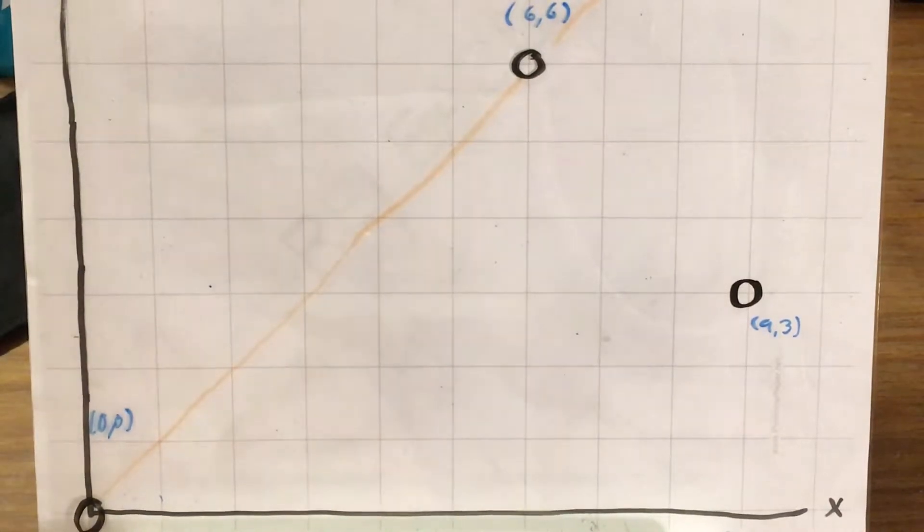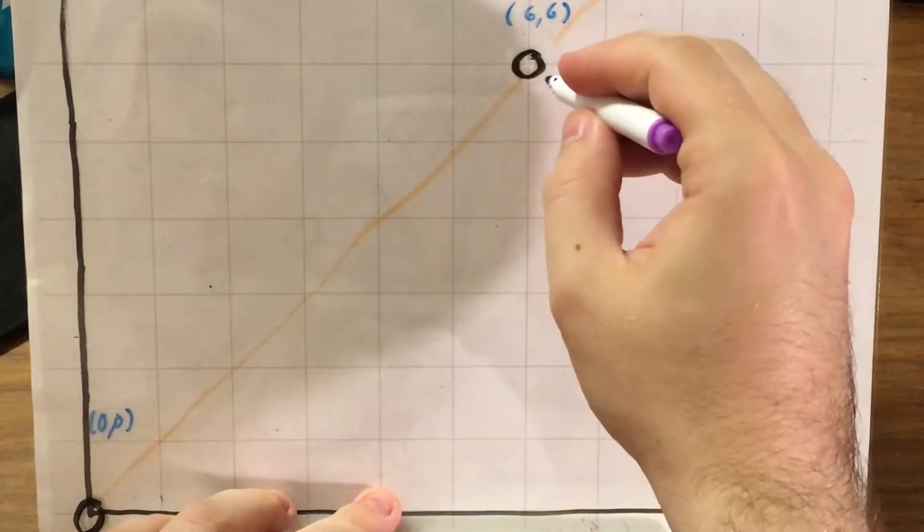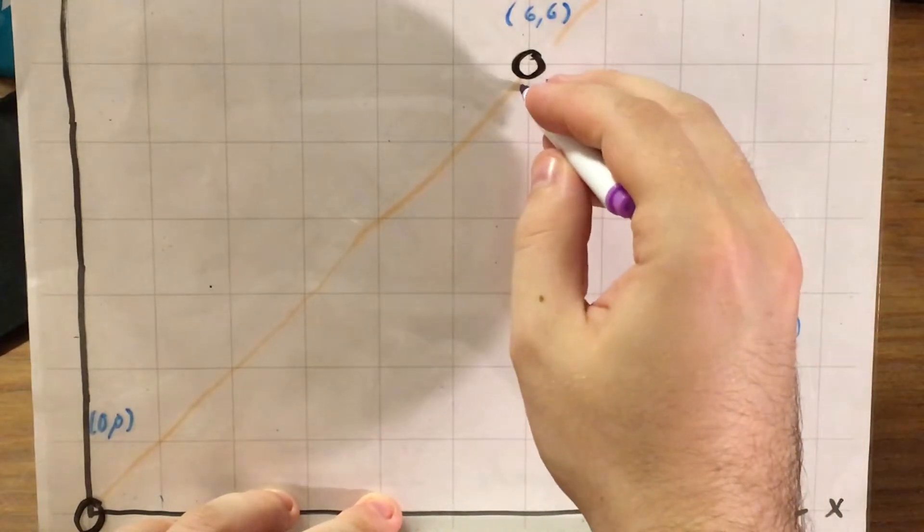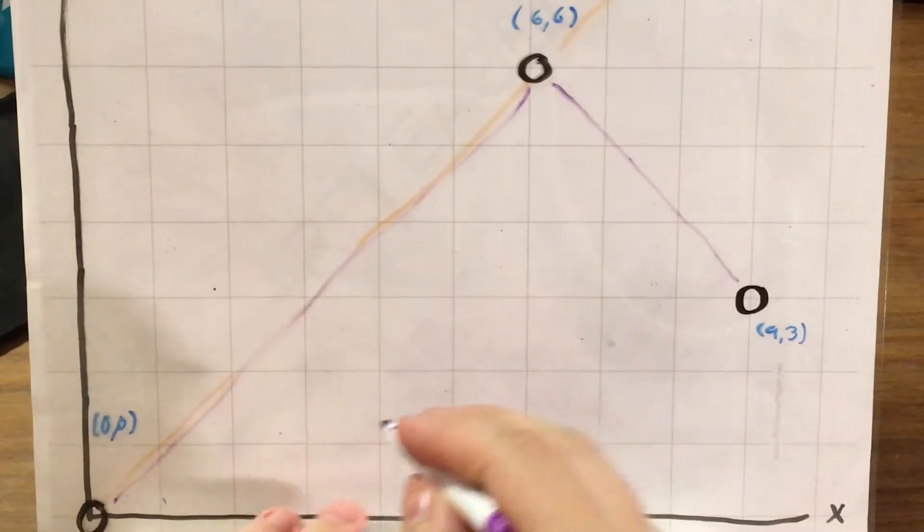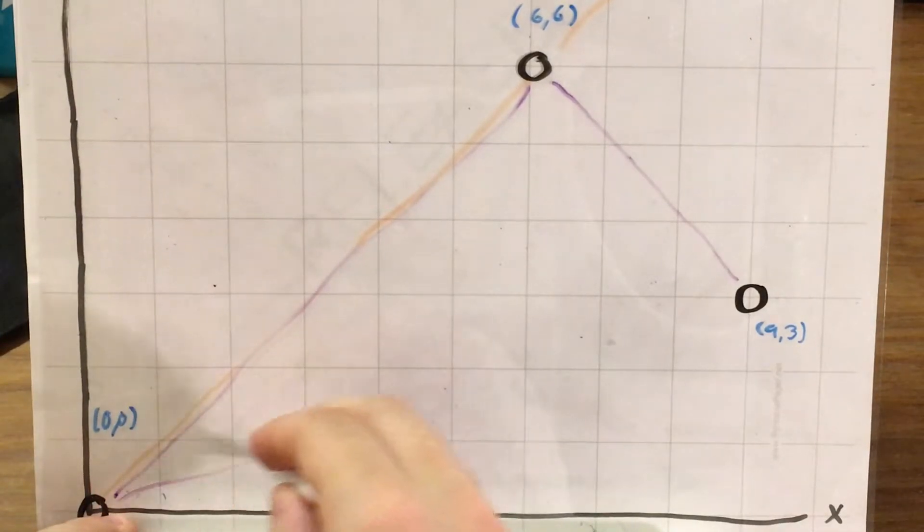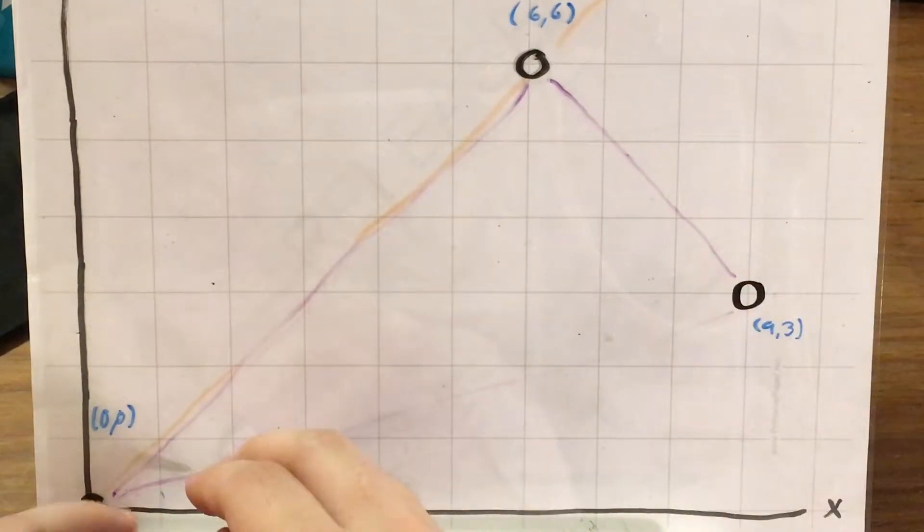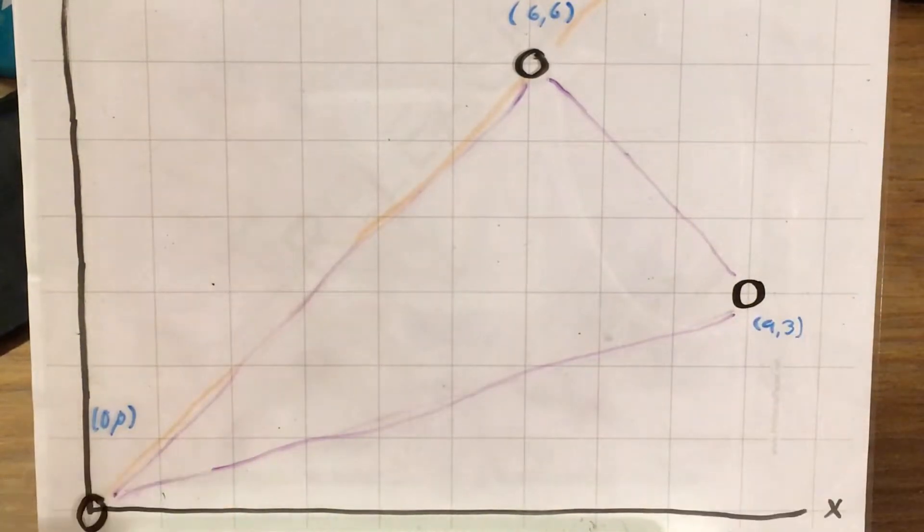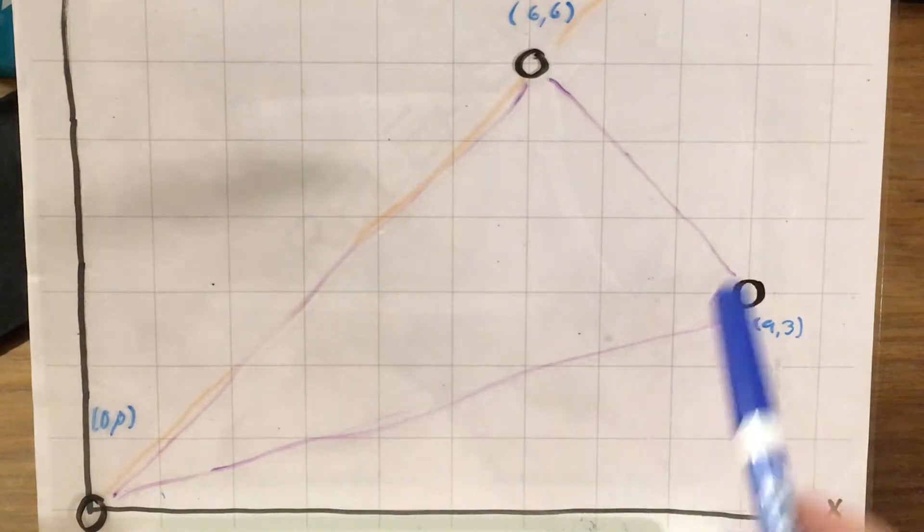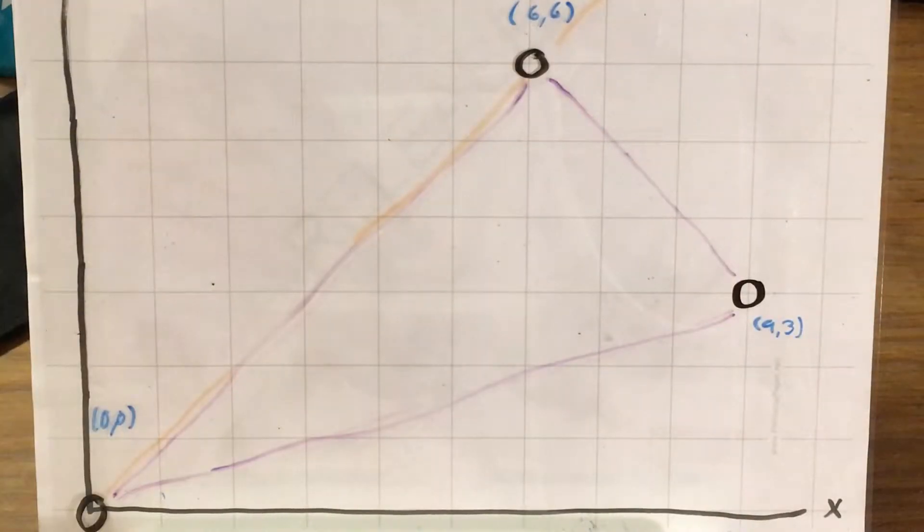And I'm also going to connect the sides of my triangle. So there's that, and draw that over here. This question is a great example of why you should always draw whatever the problem is giving you. Because when I first saw this question, I actually thought it was going to be much more complicated than it turned out to be.